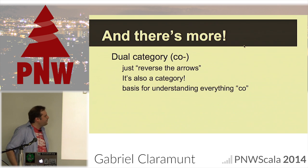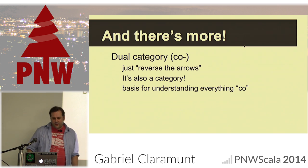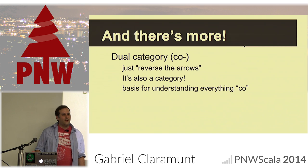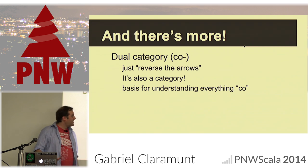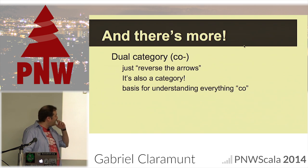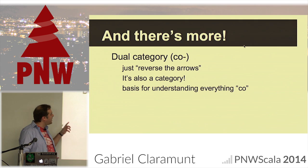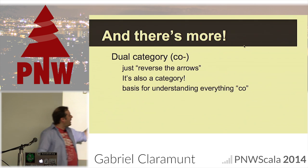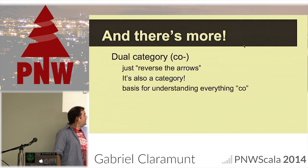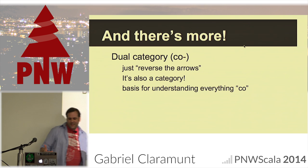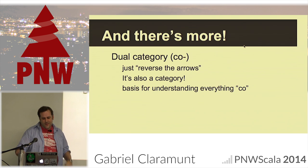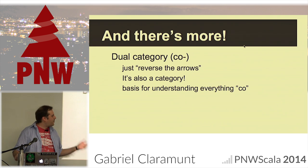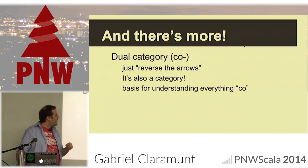If you take a category and reverse all the arrows, the result not only makes sense — it is itself another category, called the dual category. Anything with the prefix 'co-' refers to this: it's the same category with all arrows reversed.